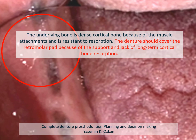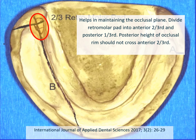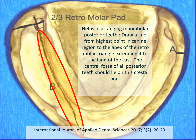The denture should cover the retromolar pad because of the support and lack of long-term cortical bone resorption. To avoid displacement, the muscle should be activated during border molding by opening wide and closing the mouth against pressure. Clinically, the retromolar pad helps in maintaining the occlusal plane. We divide it into an anterior two-thirds and posterior one-third, and the posterior height of the occlusal rim should not cross the anterior two-thirds. It also helps in arrangement of the mandibular posterior teeth. A line is drawn from the highest point in the canine region to the apex of the retromolar triangle extending to the land of the cast; the central fossa of all posterior teeth should lie on this crestal line, but the teeth should not be placed on the retromolar pad.